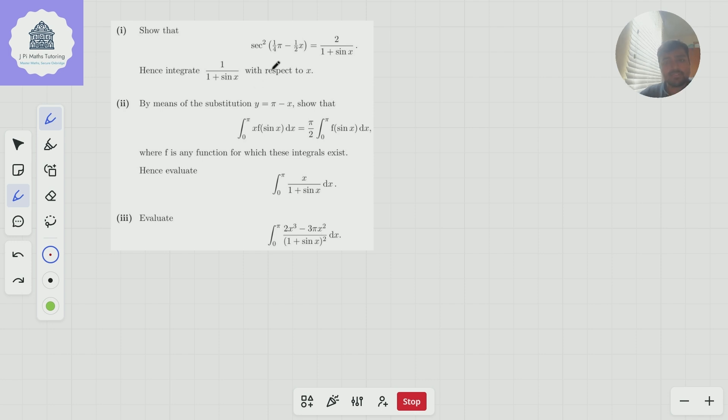Let's dive right into this first bit. I'm not going to actually show this, it's pretty straightforward. You just expand sec squared, a quarter pi minus a half x using perhaps some various double angle or compound angle formulas. So I'll leave that as maybe an exercise for yourself. So I'm going to skip to this bit, hence integrate one over one plus sine x.